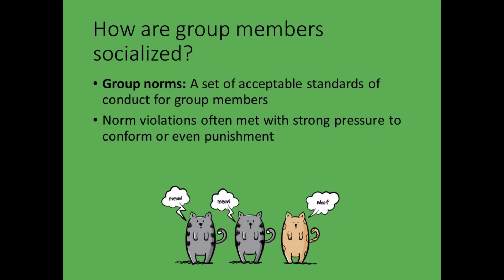Group norms are sets of rules or expectations for group members. Again, these norms can be formally or informally established. Formal norms are usually written and shared with members explicitly, such as the expectations described in an employee handbook or student code of conduct. Informal norms are often expressed more subtly, and we learn them by observing others over time. In your family and friend groups, there are ways of engaging with one another — everything from how you greet one another, how you speak to one another in conversation, how much detail you share with them, and so on. All these ways of interacting are informal norms.